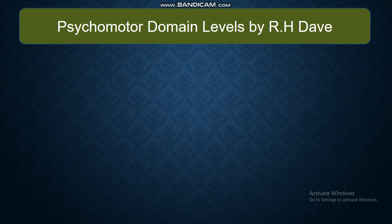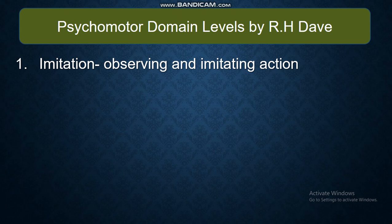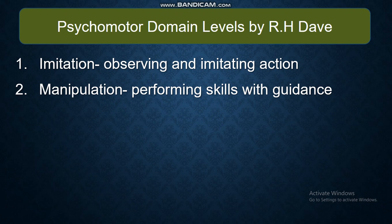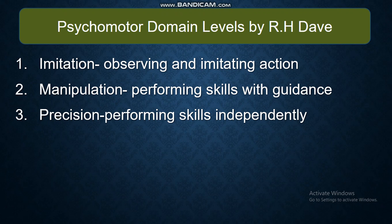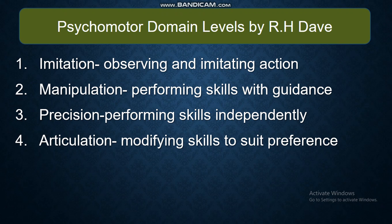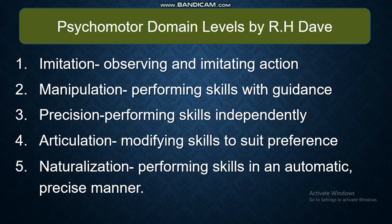Psychomotor Domain levels by R.H. Dave. Imitation — observing and imitating action. Manipulation — performing skills with guidance. Precision — performing skills independently. Articulation — modifying skills to suit preference. Naturalization — performing skills in an automatic, precise manner.